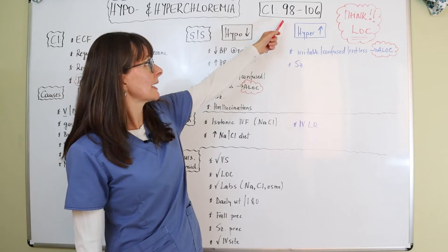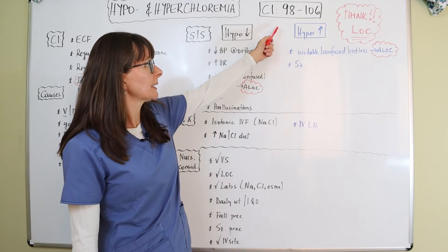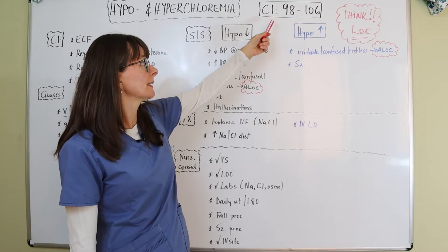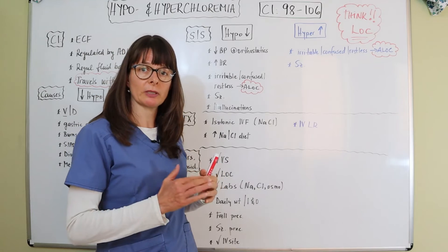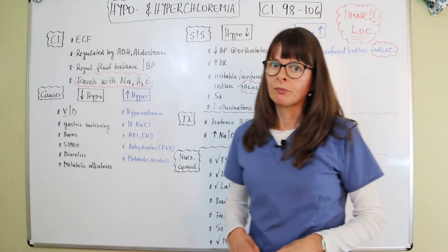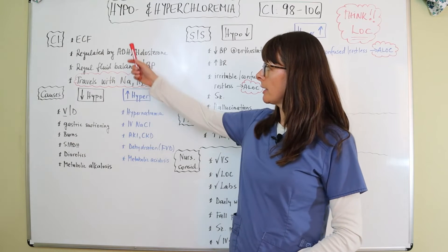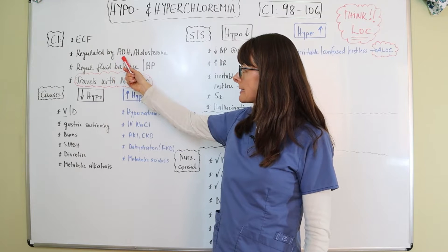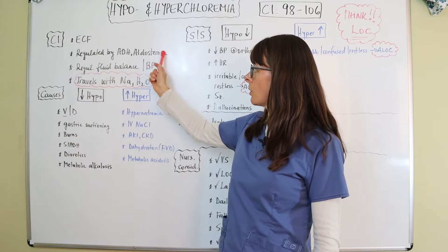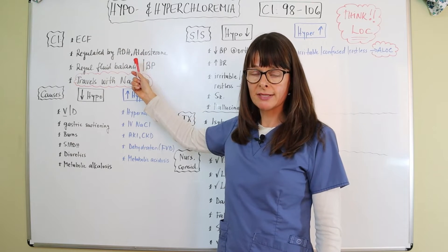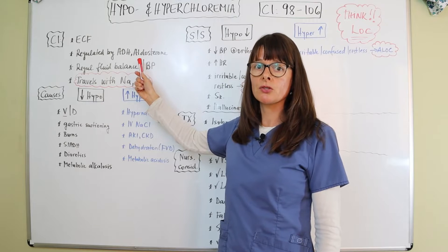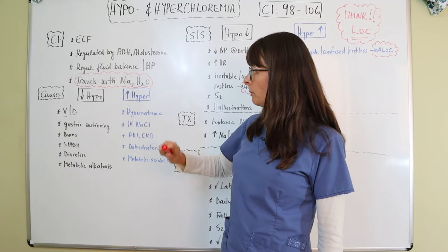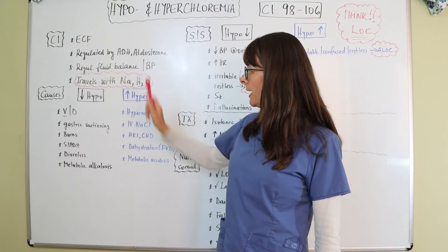Generally, chloride level is 98 through 106 in the serum, but keep in mind to always check the reference lab values for whatever lab you're working with to make sure the patient is within or not within normal range. Chloride is a major electrolyte in the extracellular fluid and it is regulated by antidiuretic hormone as well as aldosterone. Those two play a big role in the RAS system — the renin, angiotensin, and aldosterone system — that helps us regulate blood pressure. So therefore it regulates fluid balance and blood pressure.